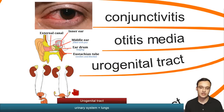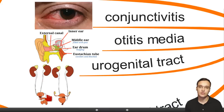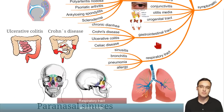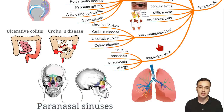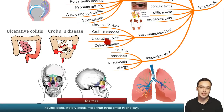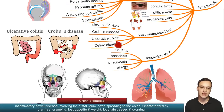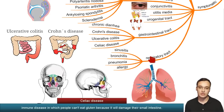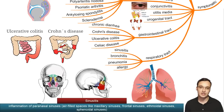In the urogenital tract — kidney, ureter, urethra — infection can occur. The gastrointestinal and respiratory tracts can also be infected since all these places have mucosa where IgA is normally present. In the gastrointestinal tract, specific inflammations include chronic diarrhea, Crohn's disease — with skipped lesions in the ileum and colon — ulcerative colitis — a continuous inflammation — and celiac disease.